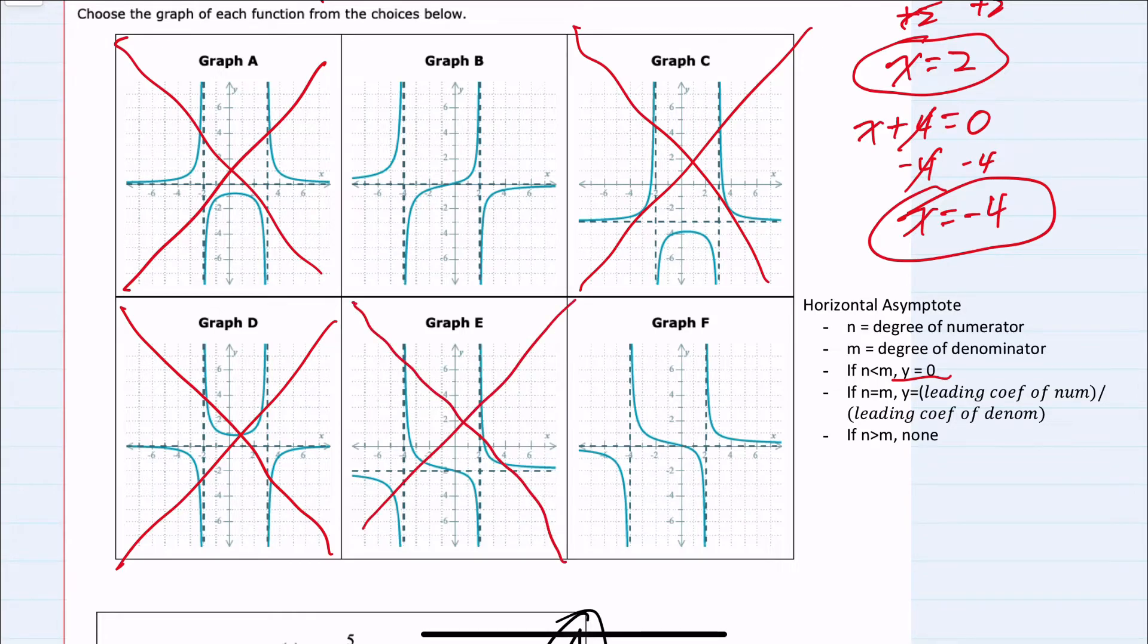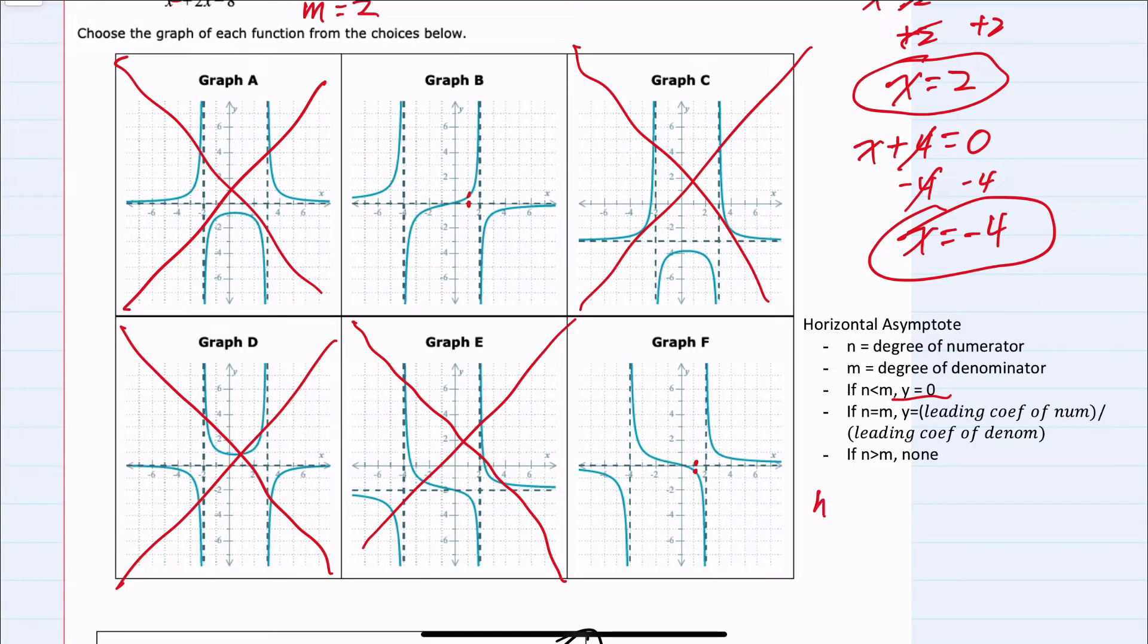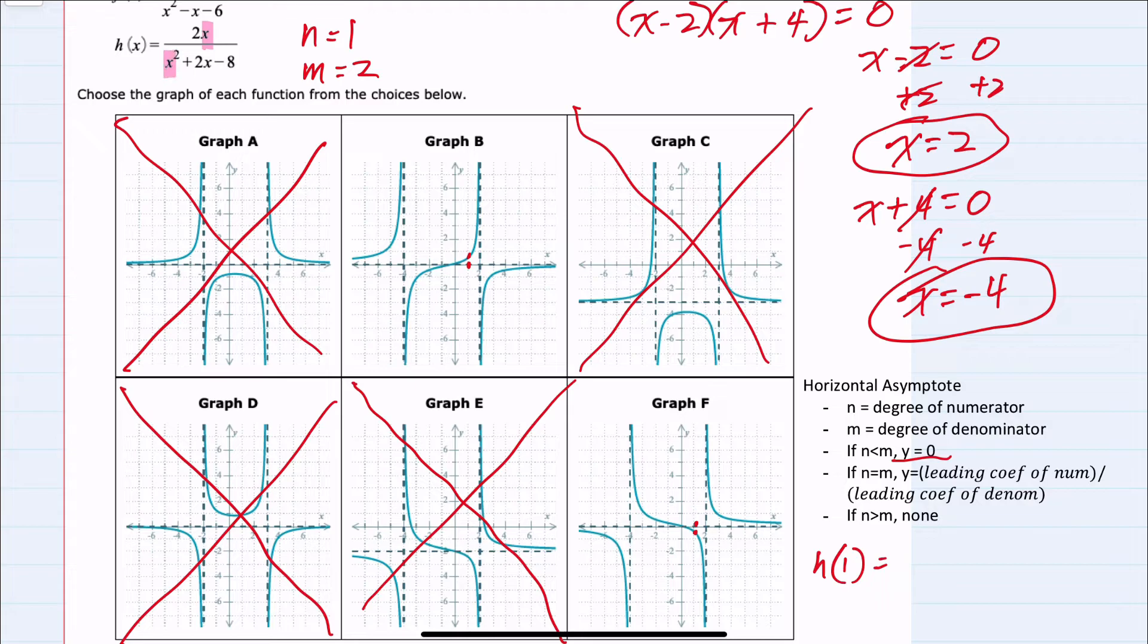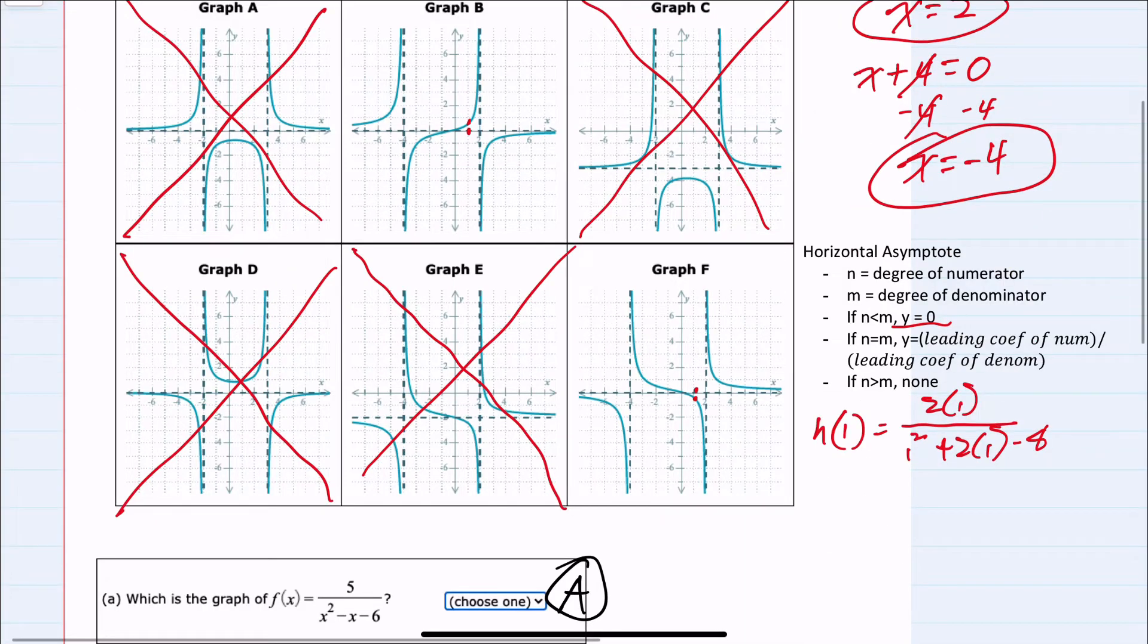And then looking for differences between b and f, if I plug in the value x equals one for b, that graph is above the x-axis, so I would get a positive y. If I plug in one for the f function, that would give me a negative y. So I can use h of one to determine which one of those is correct. Replacing our x's with ones in the numerator, we would have two times one. And in the denominator, one squared plus two times one minus eight.